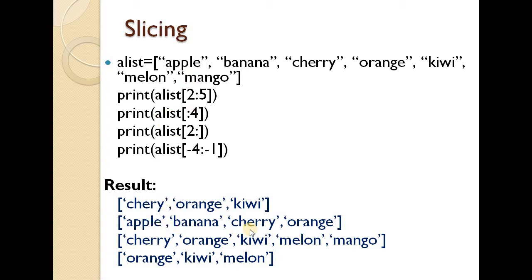Next, print a[:4] — from the beginning up to index 4, giving apple, banana, cherry, orange — four values printed. Then print a[2:] — from index 2 which is 'cherry' to the end, giving cherry, orange, kiwi, melon, and mango.